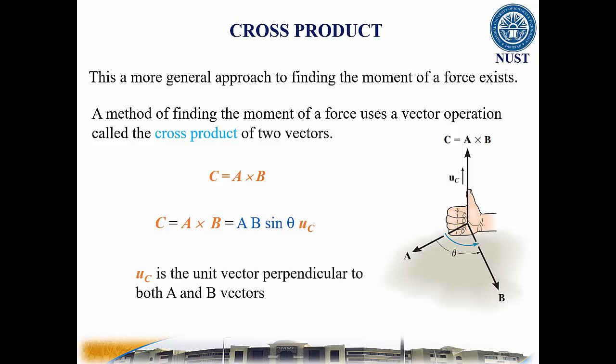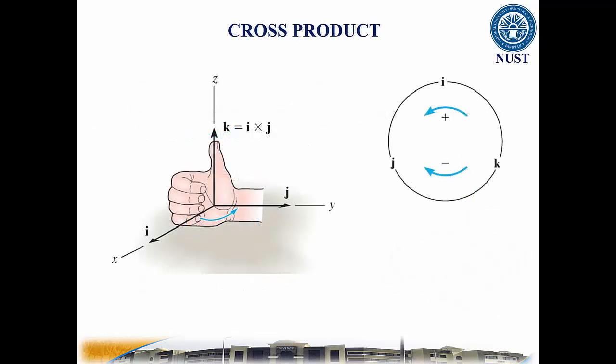As shown, Uc is the unit vector perpendicular to both A and B vectors or to the plane containing the A and B vectors. The right-hand rule is a useful tool for determining the direction of the vector resulting from a cross product.